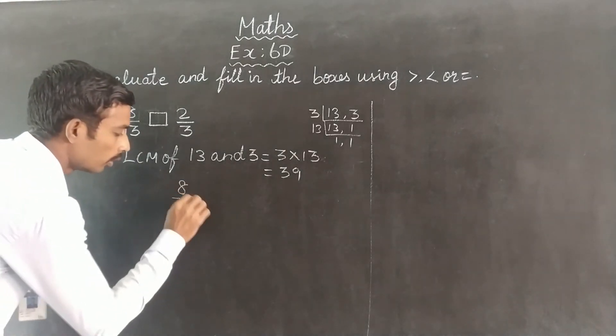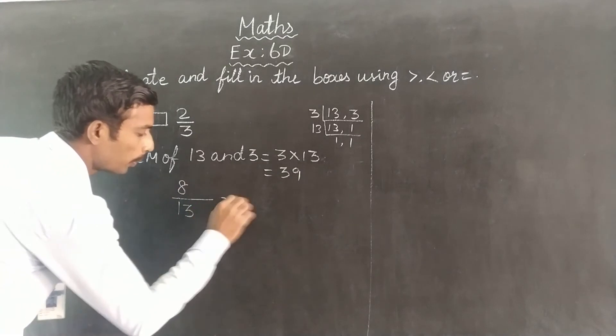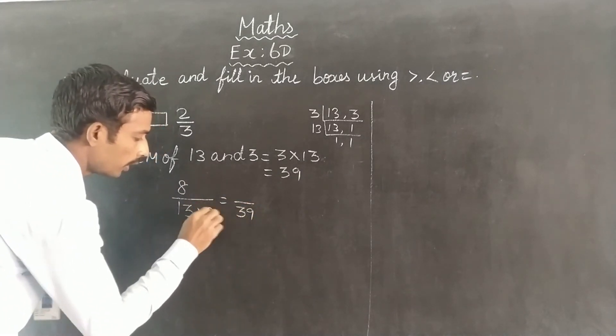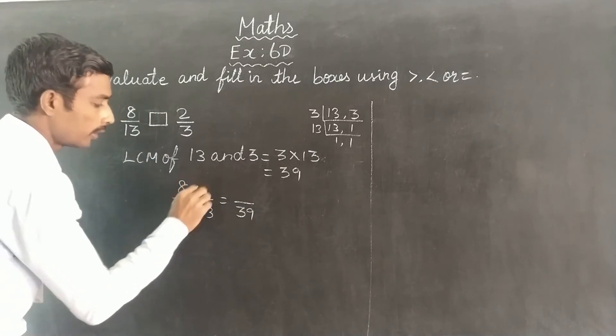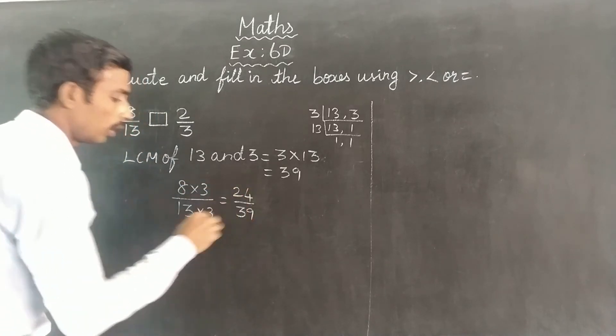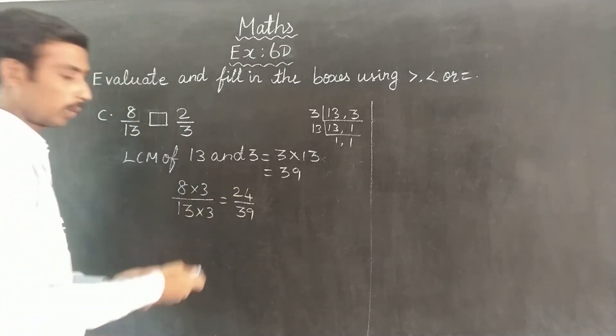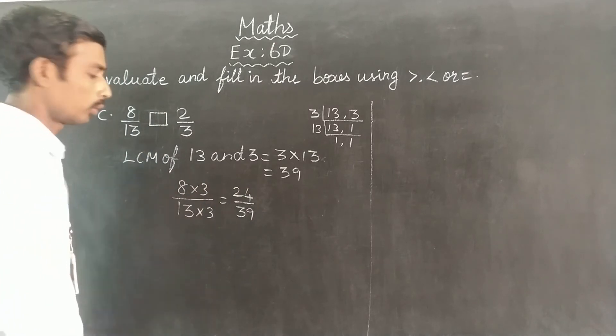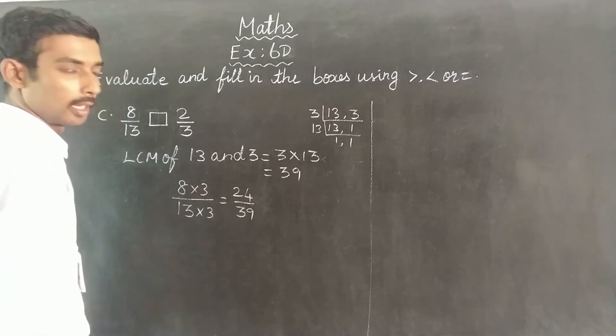So for 8/13, when we convert to denominator 39: 13 times 3 is 39, so 8 times 3 is 24. The denominator stays the same, so the numerator becomes 24. That's 24/39.